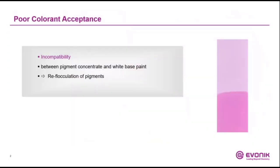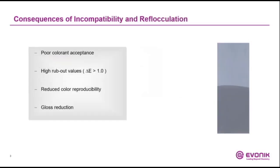Poor color acceptance. The reason for this is incompatibility between pigment concentrates and the white base paint, which leads to weak flocculation of the pigment particles. This leads to high rub-out values, reduced color reproducibility, gloss reduction, and of course poor color acceptance.